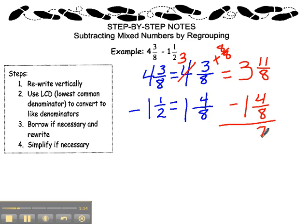11 minus 4 is 7. 7 eighths. 3 minus 1 is 2. See if you can reduce the 7 eighths any further. You cannot. So you are done. 2 and 7 eighths.